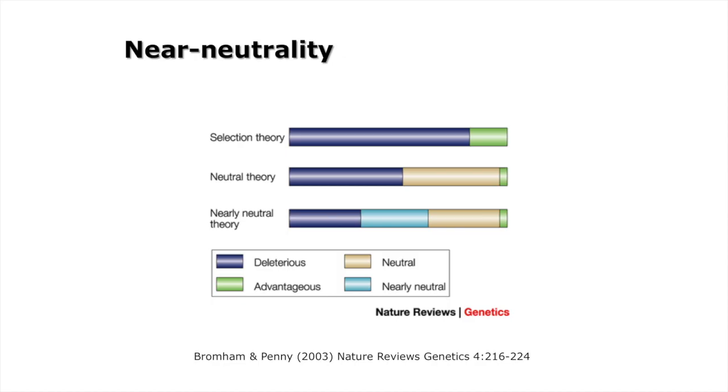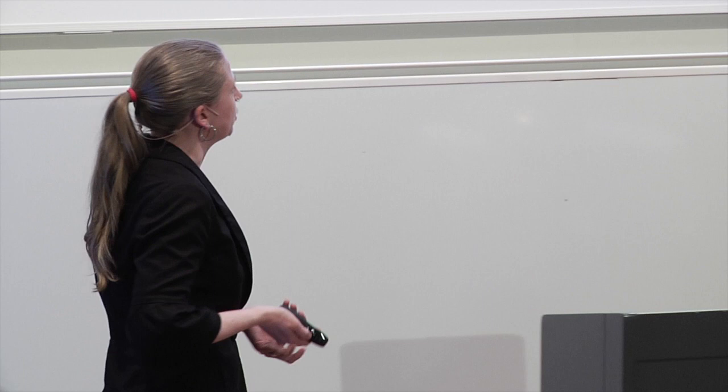I won't talk very much about the nearly neutral theory because we've heard a lot about it already, but this is similar to the figure that Professor Ota showed. Under selection theory you assume that most mutations are deleterious and a few are advantageous. Neutral theory assumes a large class of neutral mutations, and in nearly neutral theory you have nearly neutral ones where what happens depends on population size. It could also be weakly advantageous mutations where the advantage is too small to fix in the population unless the population size is really large.